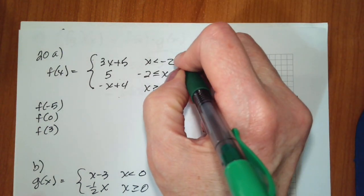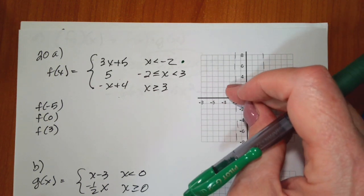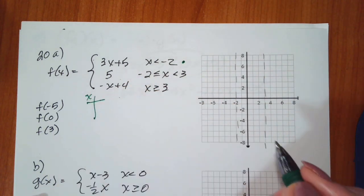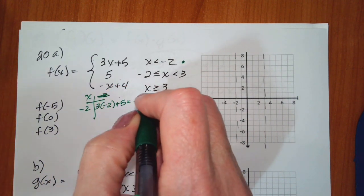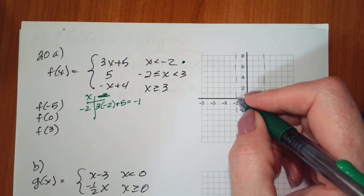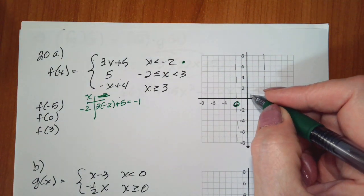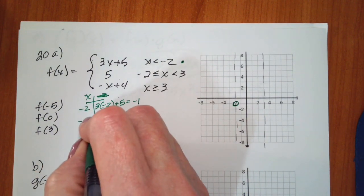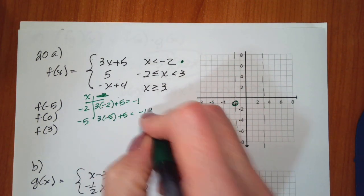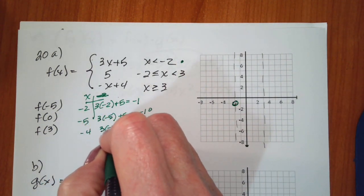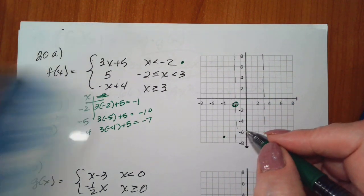Where x is less than negative 2, the function is 3x plus 5. I'll find its value at x equals negative 2: that's 3 times negative 2 plus 5, which is negative 1. So that gives me the point negative 2, negative 1 — and since it does not include that, it has to be an open circle. Let's do another point at x equals negative 4: 3 times negative 4 plus 5 is negative 7. So I have negative 4, negative 7, and then I connect my dots.